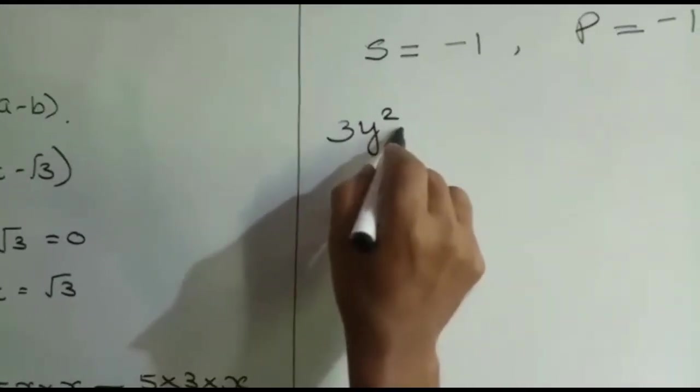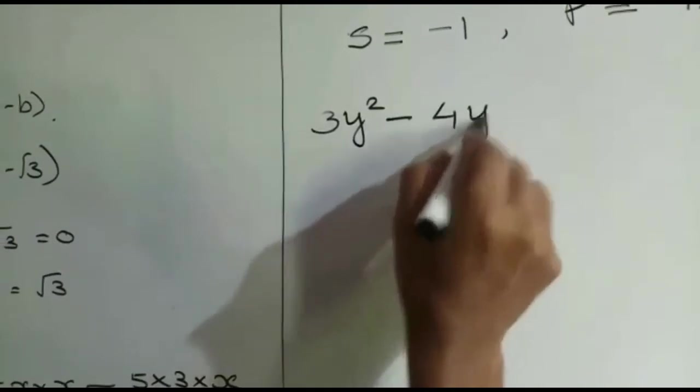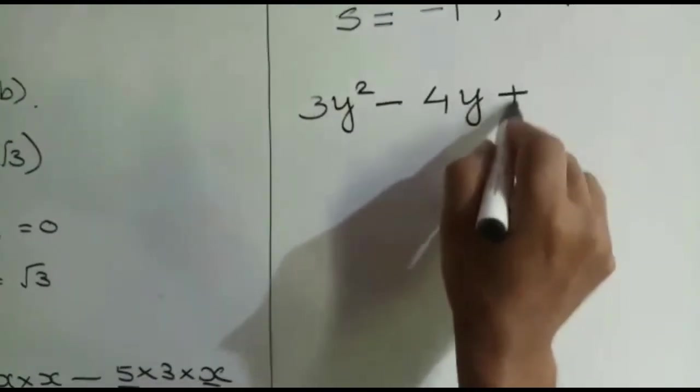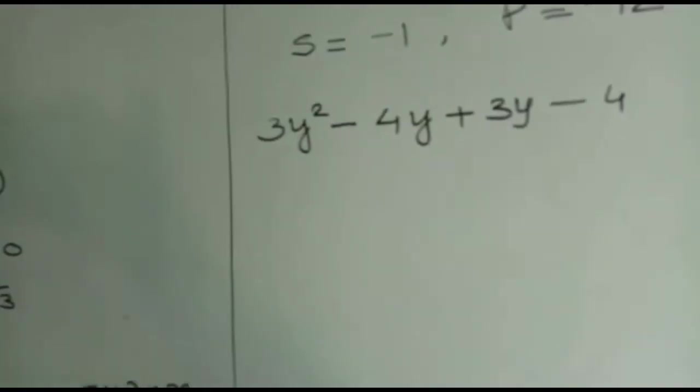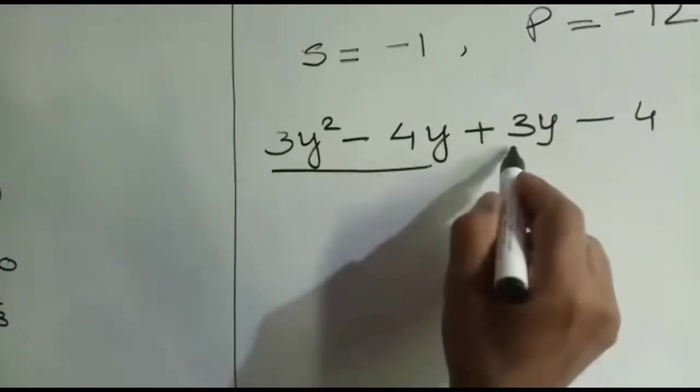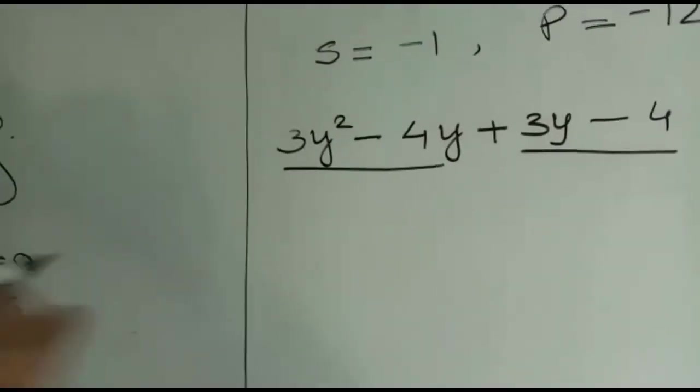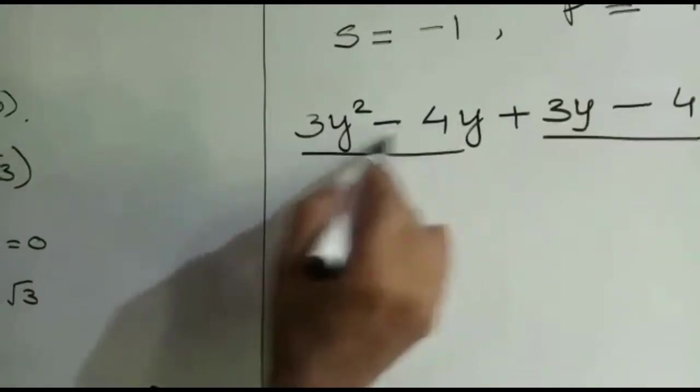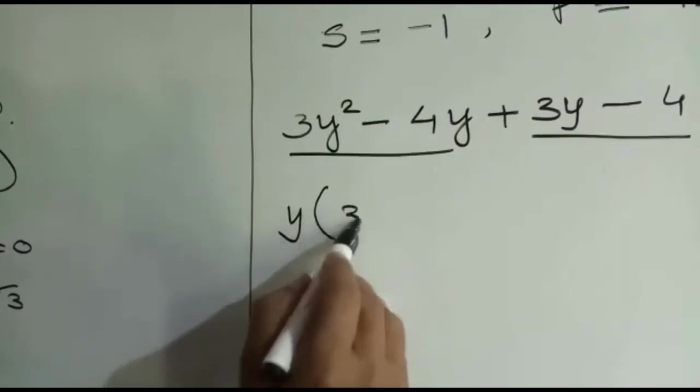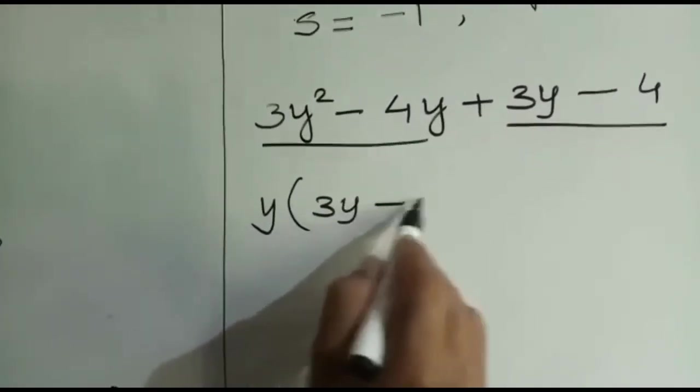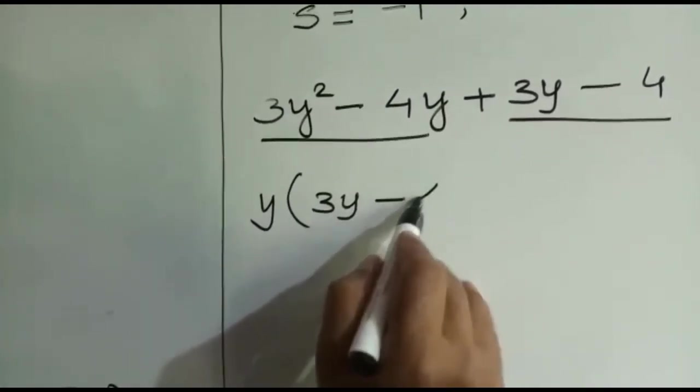3y² - 4y + 3y - 4. Then group them into two groups of two. From the first we identify the highest common factor as y, then (3y - 4).